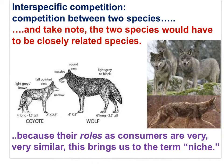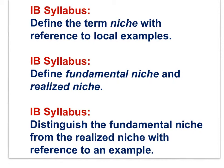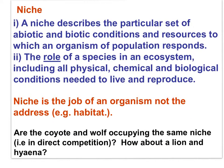Interspecific competition is competition between two different species, like the wolf and the coyote. But if there's going to be interspecific competition, the two species must be closely related. Why? Because in order to compete, their role in the food chain would have to be very, very similar. And because their roles as consumers are very similar, this brings us to the term niche. Here are the next set of IB syllabus statements: define the term niche with reference to local examples; define fundamental niche and realized niche; distinguish the fundamental niche from the realized niche with reference to an example.